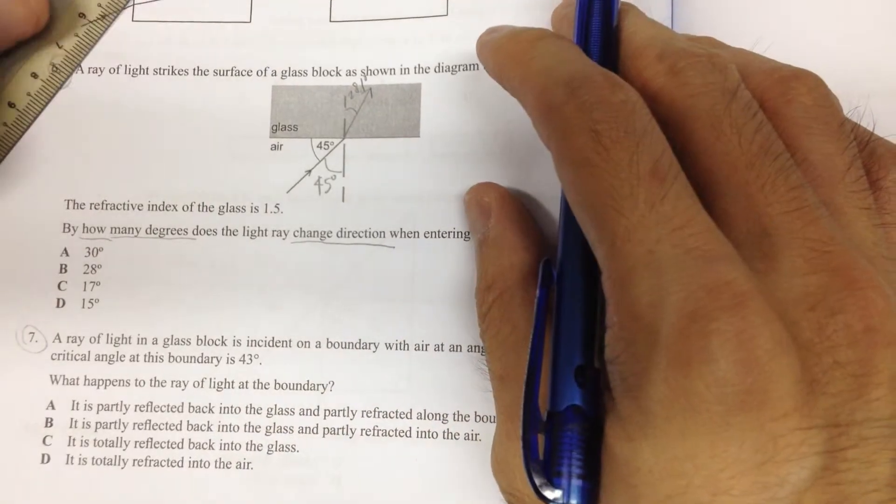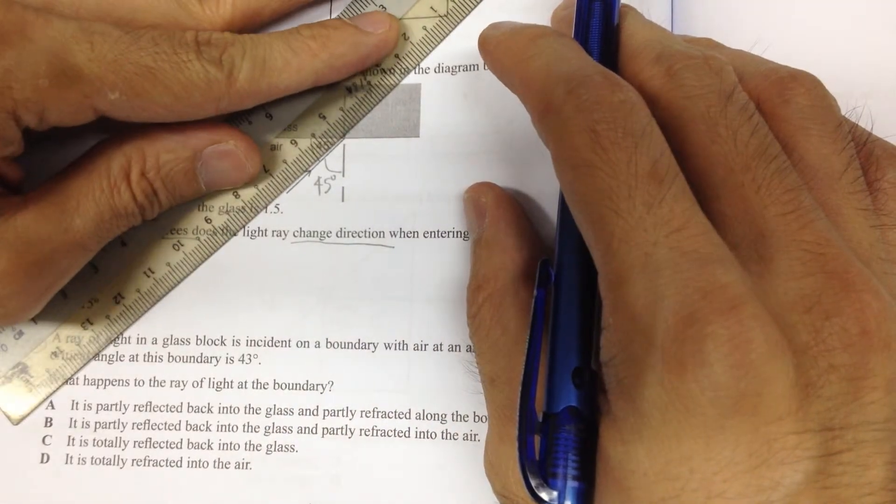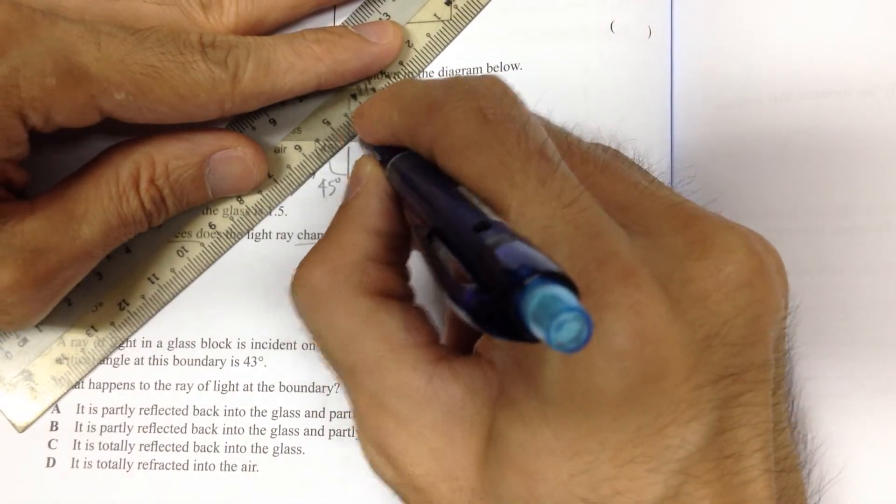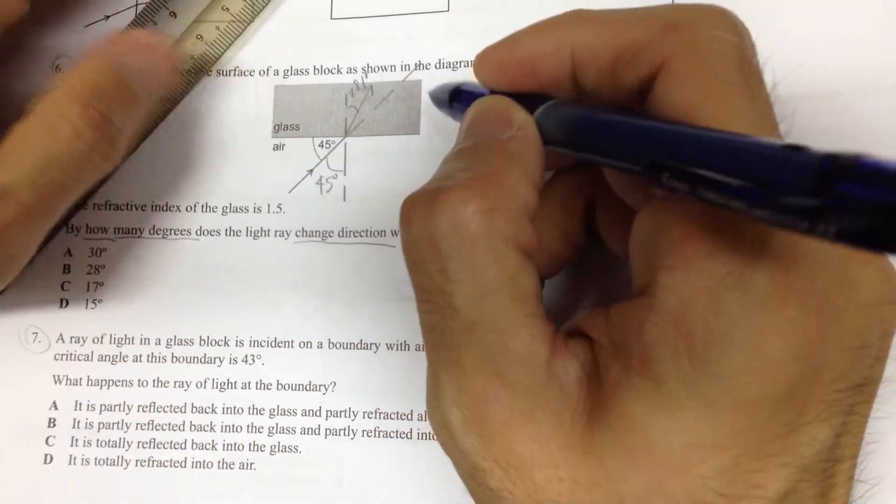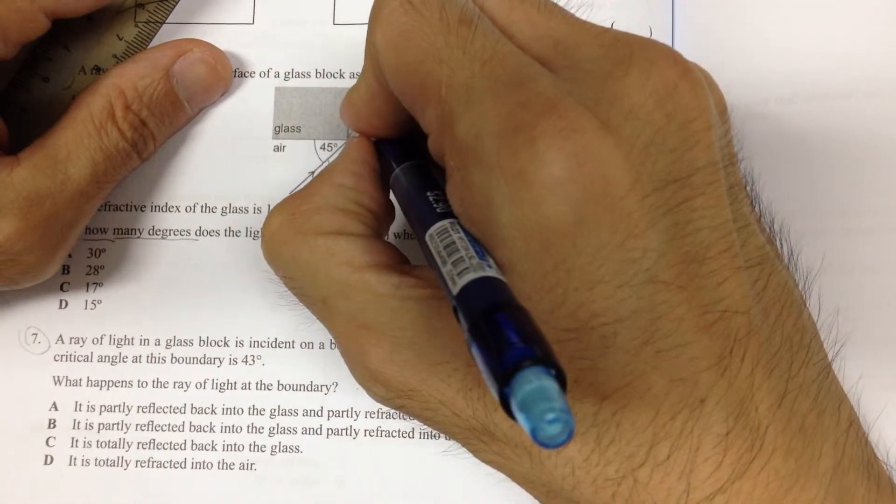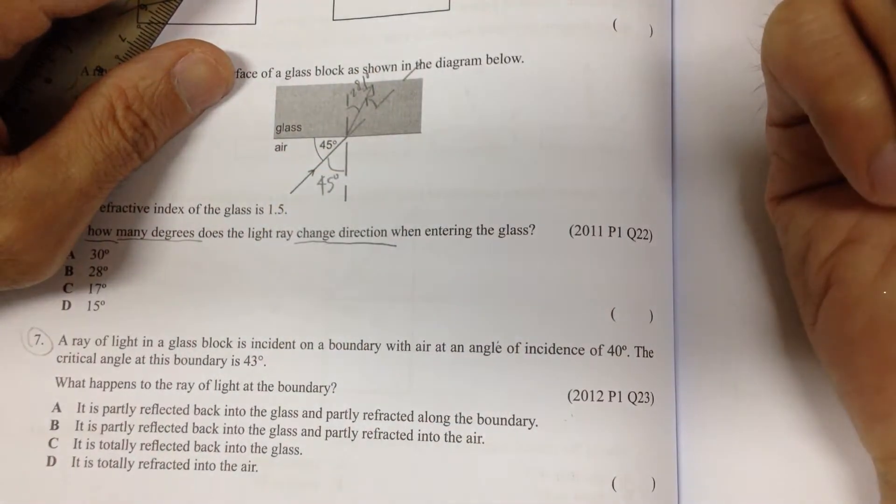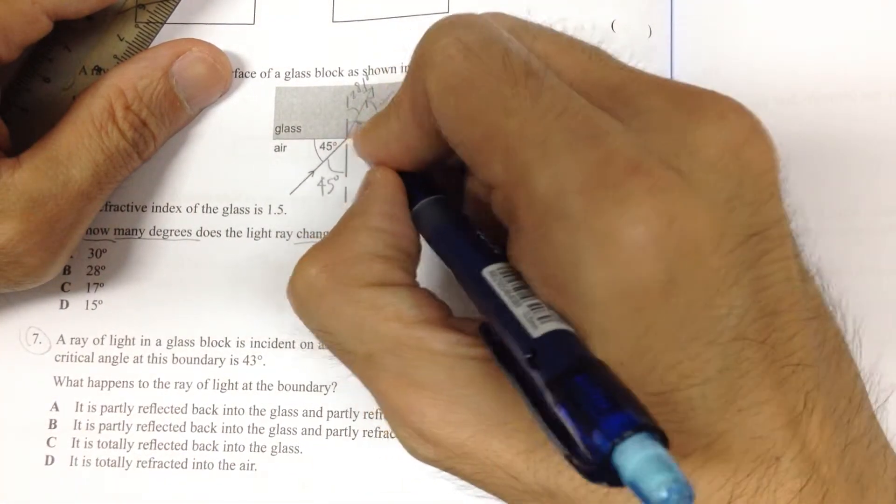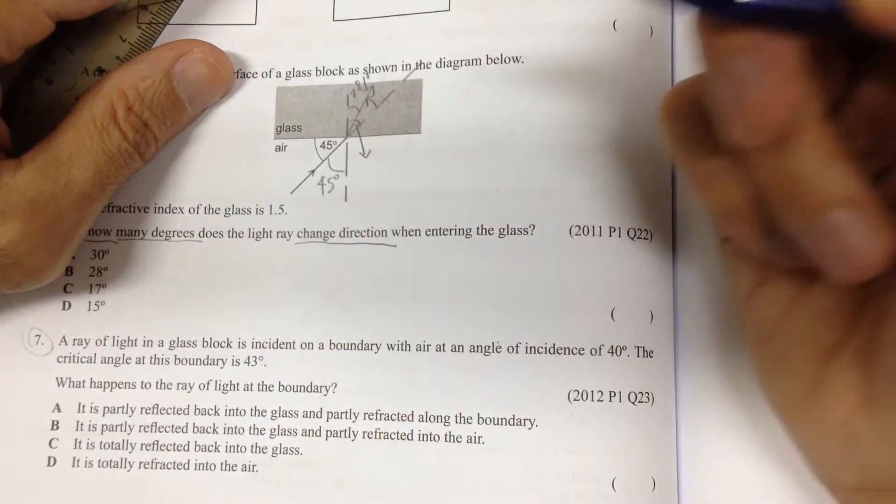So, what it means is that if originally there is no medium of glass, it will just go through like that. So, due to this medium of glass, it actually changed by these degrees. Right? So, first, we need to know this original angle, this total original angle.